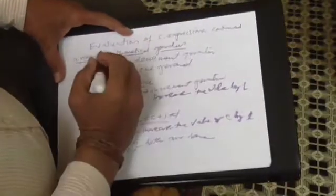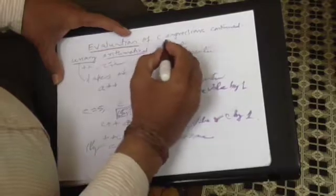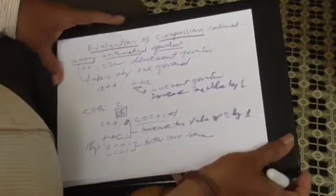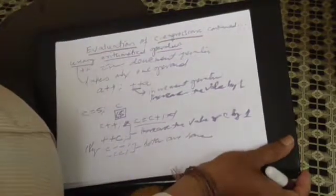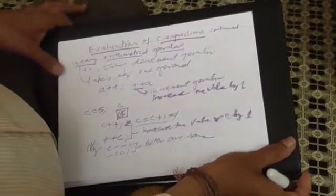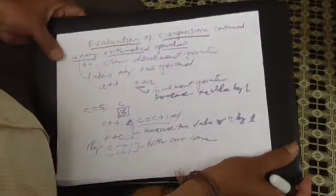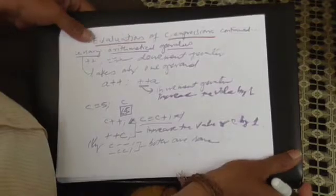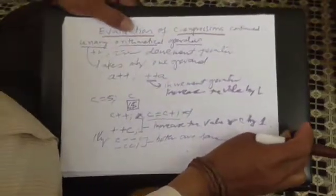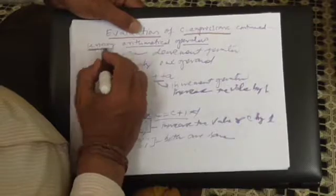Hello, good morning. Today we are going to speak about the evaluation of C expressions. In my lecture part 1, I have explained about the arithmetical operators — binary arithmetical operators. Now I am going to discuss about the unary arithmetical operators.